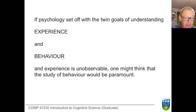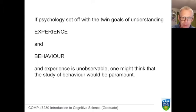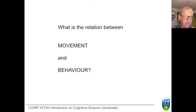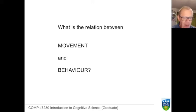Experience itself is unobservable, and William James is our principal figure of reference there. Behaviour, on the other hand, seems to be entirely observable — surely this is the simplest thing to study. So that leads us to ask: what is the relationship between movement and behaviour? Unquestionably, we can record, document, and diagram movement. We can observe movement. But how is that different from behaviour?